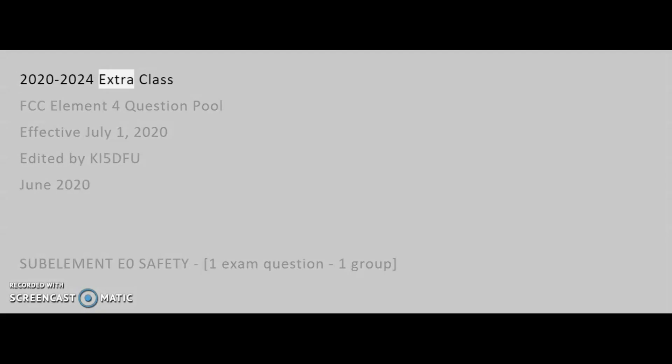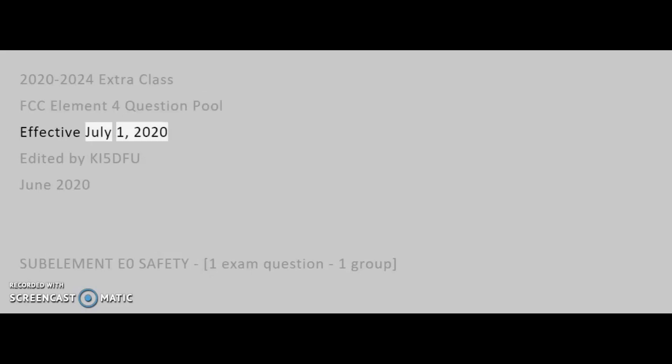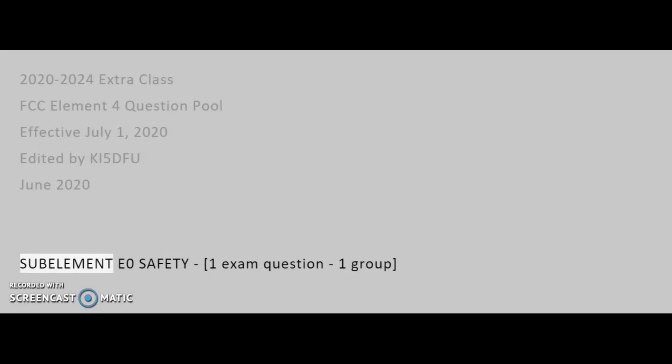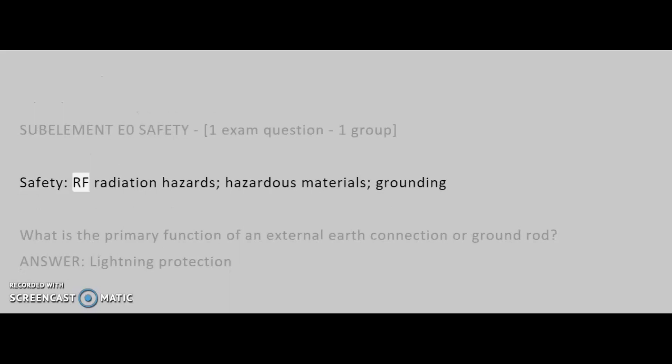2020-2024 Extra Class FCC Element 4 Question Pool, effective July 1, 2020. Edited by KI5DFU, June 2020. SubElement E0: Safety. 1 exam question, 1 group. Topics include: Safety, RF Radiation Hazards, Hazardous Materials, and Grounding.